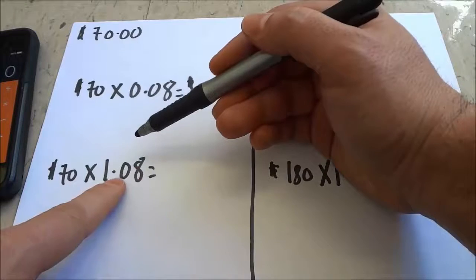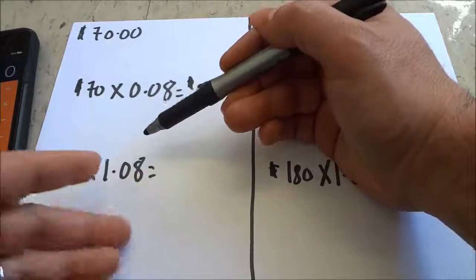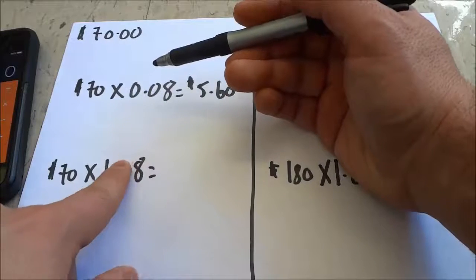But it can be 1.15 if we had to pay a 15% sales tax, or any number—whatever the percentage is, you just put the percentage right there after the decimal.